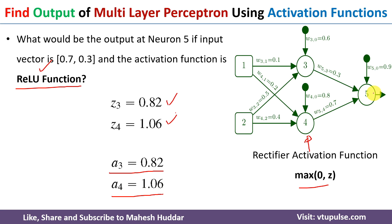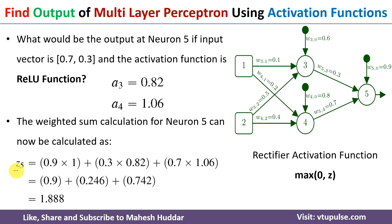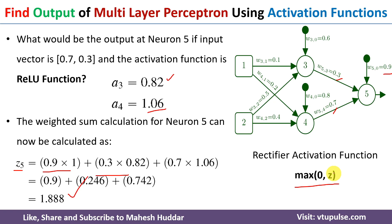Now we calculate the weighted sum at neuron 5. z5 = bias weight 0.9 × 1, plus weight for neuron 3 which is 0.3 × 0.82, plus weight for neuron 4 which is 0.7 × 1.06. Solving gives z5 = 1.888. Applying the ReLU activation function: max(0, 1.888) = 1.888. So the output at neuron 5 using the ReLU activation function is 1.888.